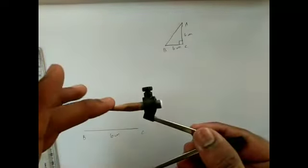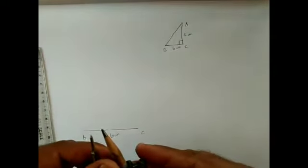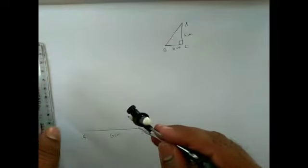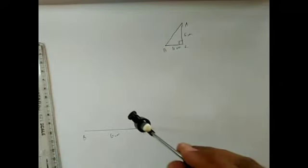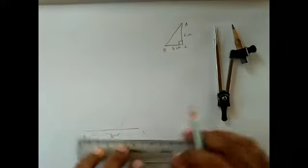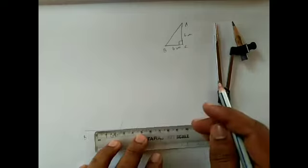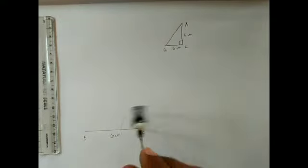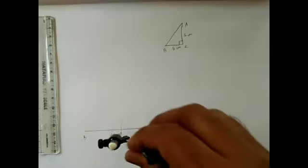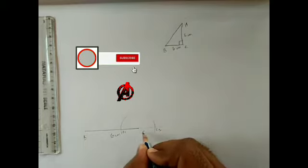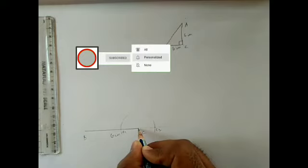For that, take any radius in the compass — two centimeters is comfortable. With vertex C as center, draw a semicircle, or draw two arcs on either side of the line BC. If needed, extend the line BC using a dotted line. The two points where the arcs meet the line are labeled C1 and C2.